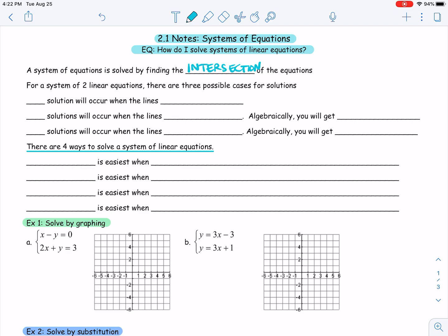As you know, a system of equations is solved by finding the intersection of those equations. For a system of two linear equations, there are three possible cases for the solution. The first thing is that they could cross. The two lines could cross and you would have one solution, and that one solution is where the lines intersect.